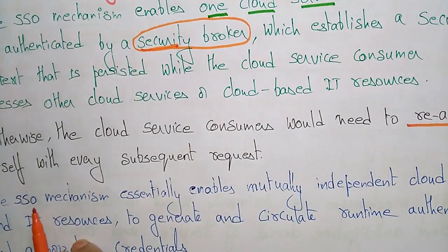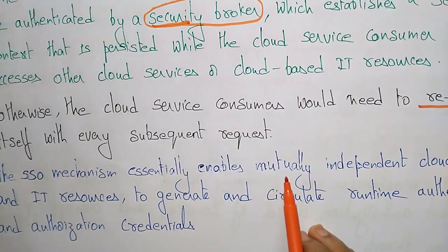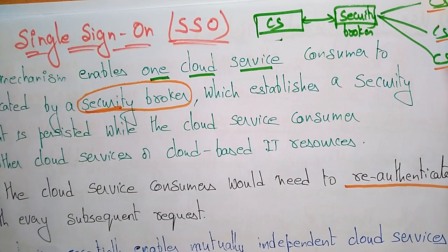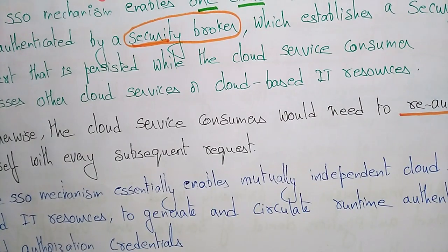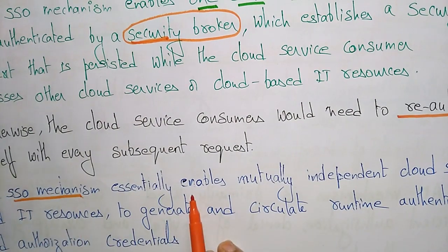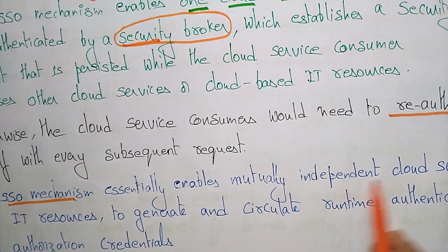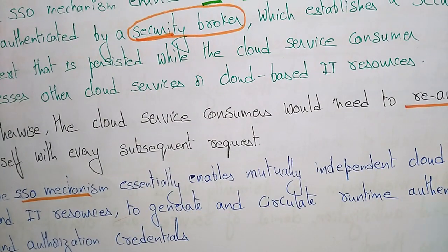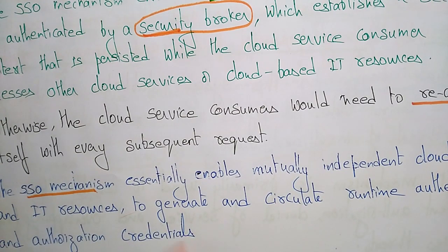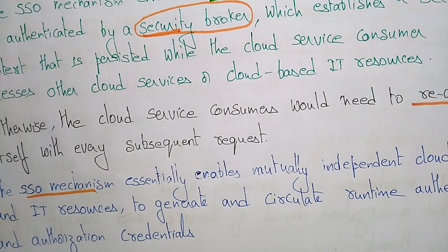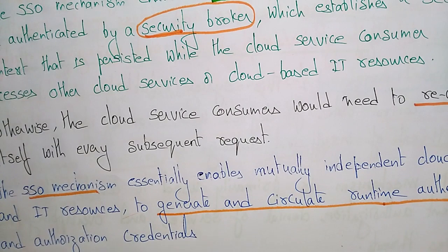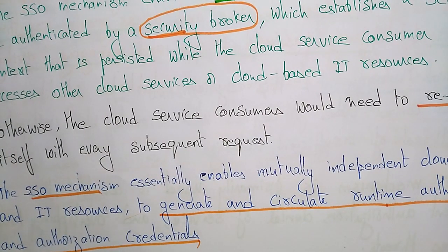The SSO mechanism — the Single Sign-On mechanism — essentially enables mutually independent cloud services. These are all mutually independent cloud services; each one is independent. This SSO mechanism essentially enables those mutually independent cloud services and IT resources to generate and circulate runtime authentication and authorization credentials.